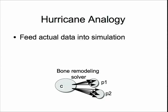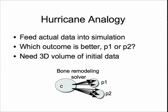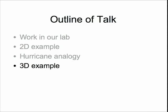So in this analogy, we have an observed clavicle, some sort of bone remodeling solver, and we advance forward over time according to procedure P1 or P2, looking at ensemble averages based on predictions — not simply observed data. There are two distinct methods for making a decision based on medical data: comparing against cohorts, and making predictions based on computational simulation. Importantly, we need a 3D volume of initial data, not just a 2D image. That brings me to the 3D example.